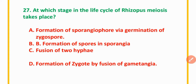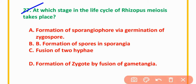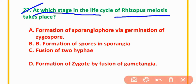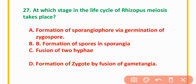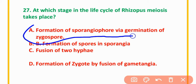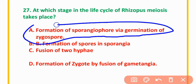MCQ Number 27: At which stage in the life cycle of Rhizopus does meiosis take place? The correct option is option A: during germination of the zygospore.